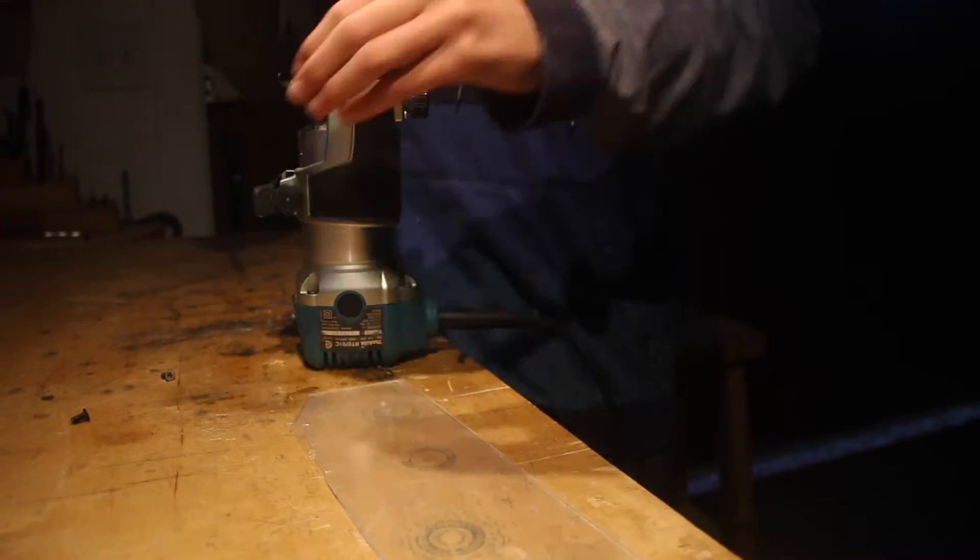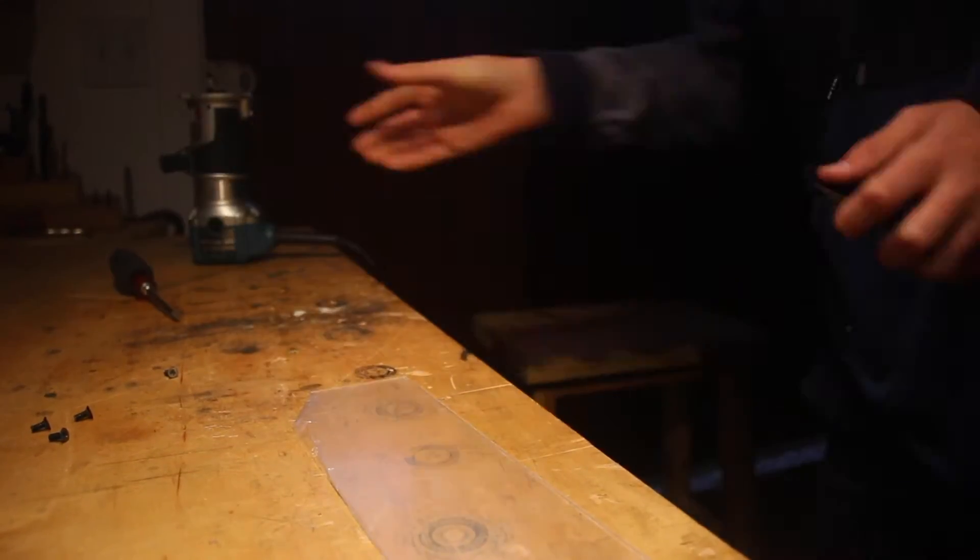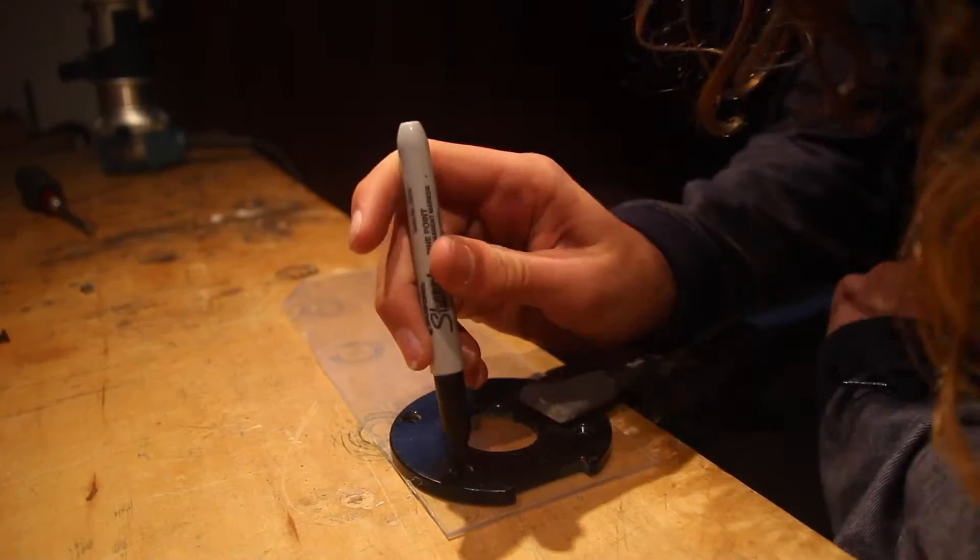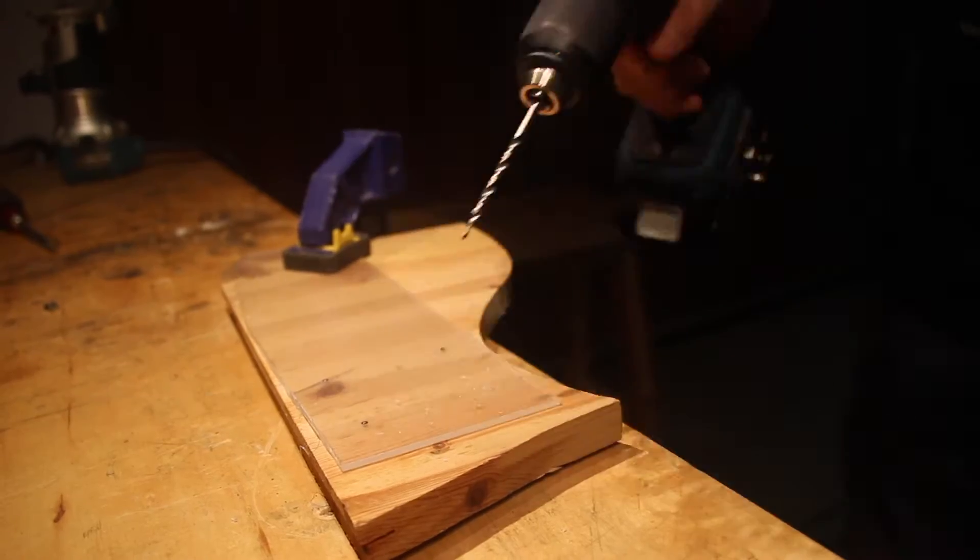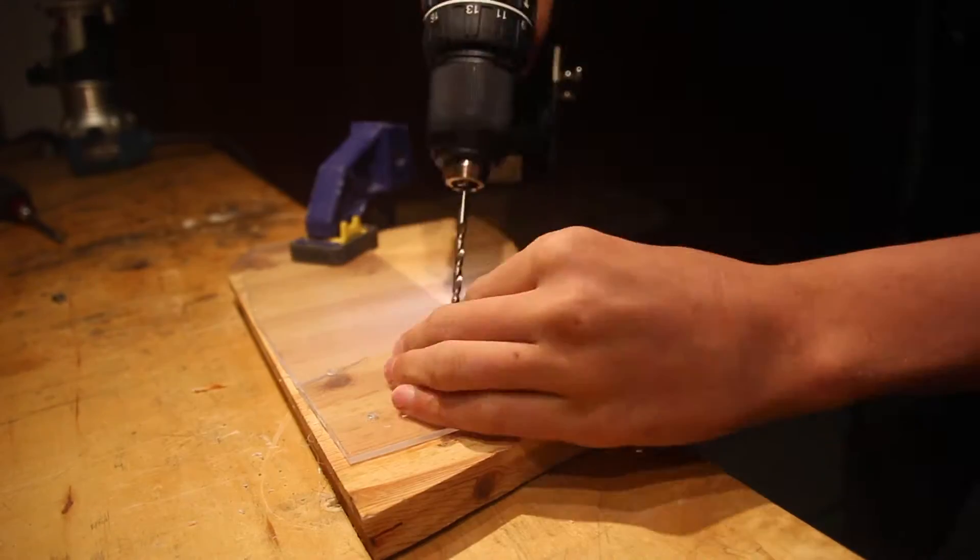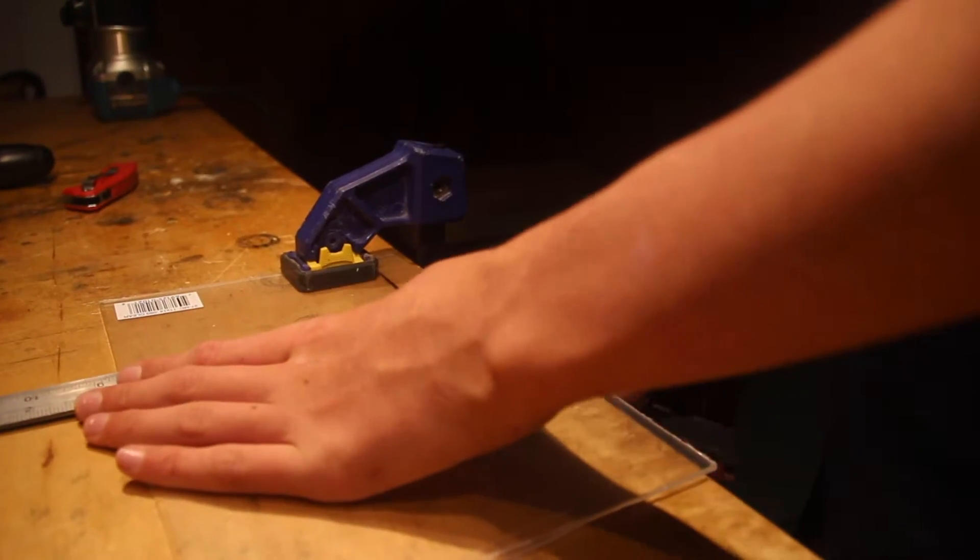Here I'm taking off the base for the current router that I have, and I'm doing this so I can mark out the location for the holes for the screws to go. And here I'm drilling the holes. Quick tip, if you run the drill in reverse, it will not damage the plexiglass or crack it at all.